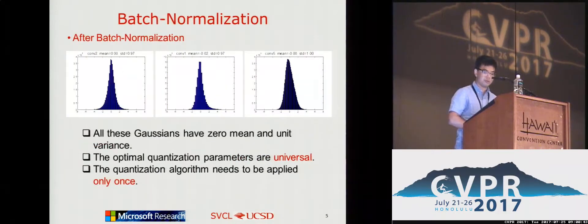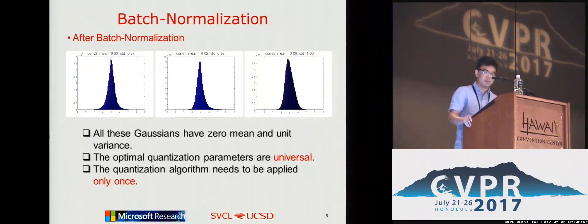Our second contribution is to resort to batch normalization. As seen in the figure, after batch normalization, all these Gaussians have zero mean and unit variance. Then the optimal quantization parameters are universal, and the quantization algorithm needs to be applied only once.